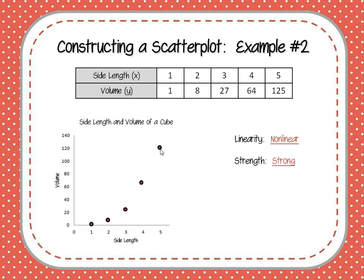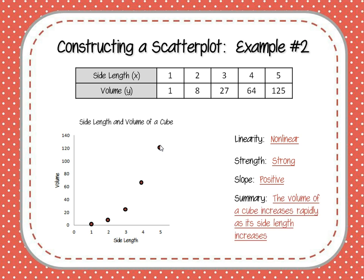In terms of correlation, this one is very, very strong. We know that the side length is actually causing the volume, so it's showing a very strong relationship. The correlations we're looking for are not always the same as causation, but in this case it is. The slope we could say is positive — as our side length is increasing, so too is our volume.